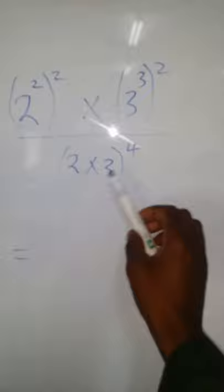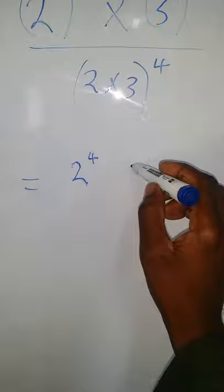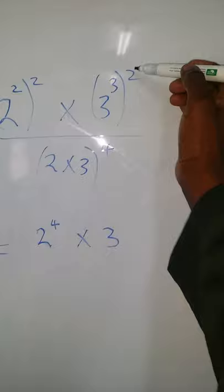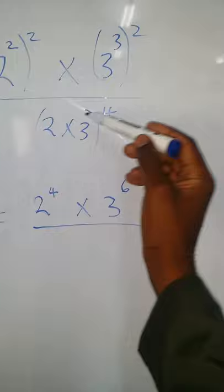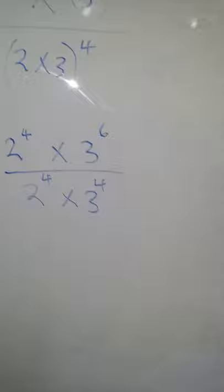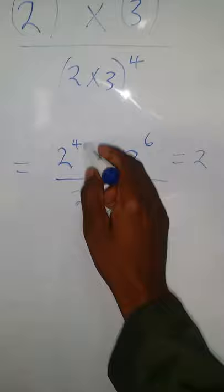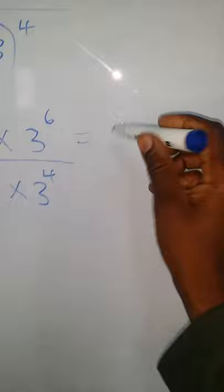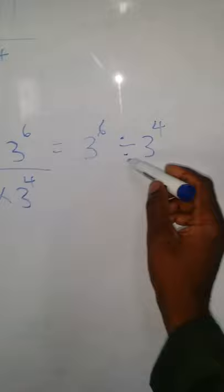For this question: two squared raised to the power two, multiplied by three to a certain power. This is the same as two to the power four. When raising a power to a power, you multiply the powers. We can distribute: two to the power of four, and three to the power of four as well.